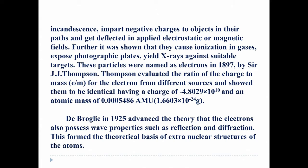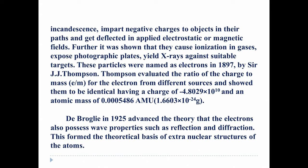Sir J.J. Thomson evaluated the ratio of charge to mass for an electron from different sources. He found it has a charge of minus 4.8029 × 10⁻¹⁰ and an atomic mass of approximately 0.0005486 atomic mass units. When converted into actual numbers, an electron weighs 1.6603 × 10⁻²⁴ grams.